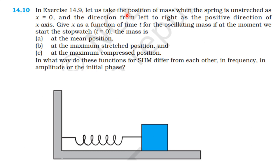Let us take the position of the mass when the spring is unstretched as x equal to 0, and the direction from left to right as the positive direction of the x-axis. Give x as a function of time t for the oscillating mass. If at the moment we start the stopwatch, the mass is at the mean position, at the extreme position, at the maximum stretched position, or at the maximum compressed position.